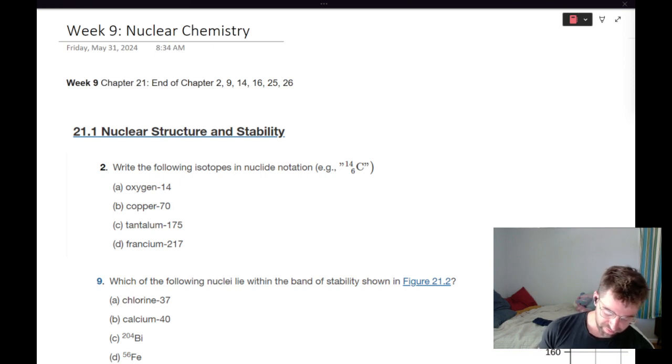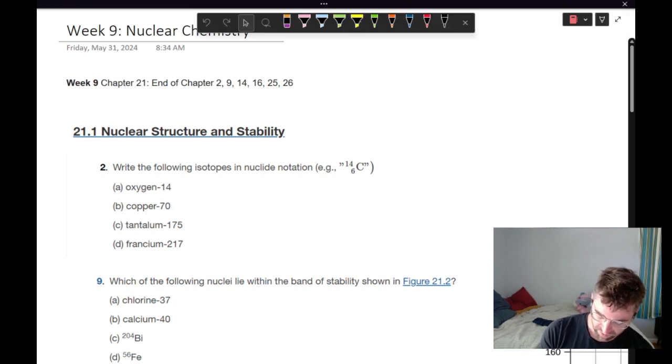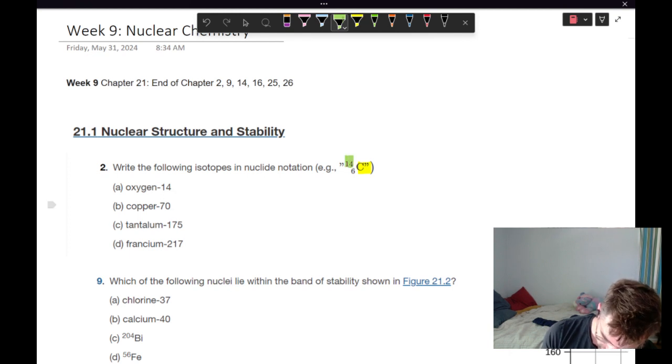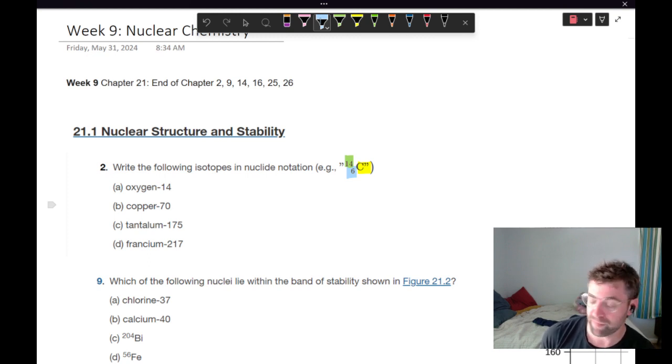So first we are writing the following isotopes in nuclide notation, and we're given the example of carbon-14. And what you need to remember about this is you, of course, have your alphabet identifier, different from alpha decay, in this case carbon. And then up top, you have the mass number. Now this is different from what the average mass for this element is in nature, and that is what makes it a radioactive isotope. It's unstable. And then you have the number of protons. This is the atomic number.